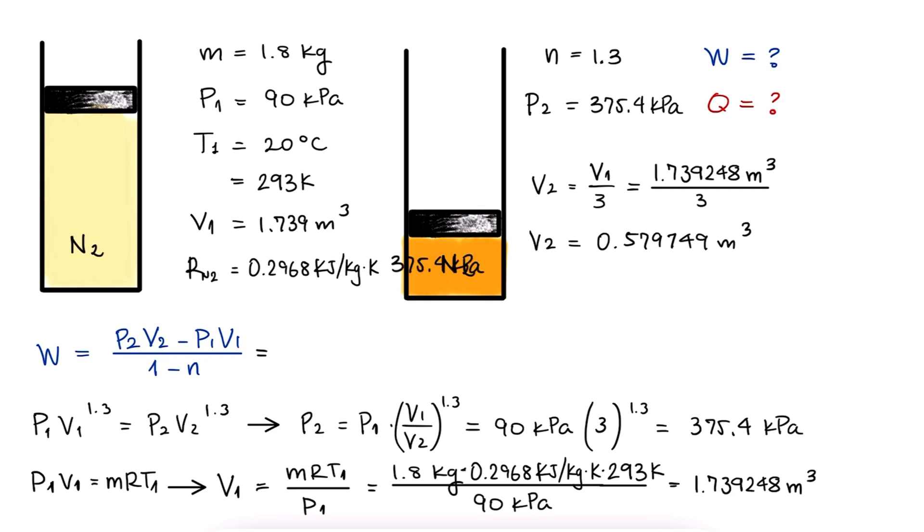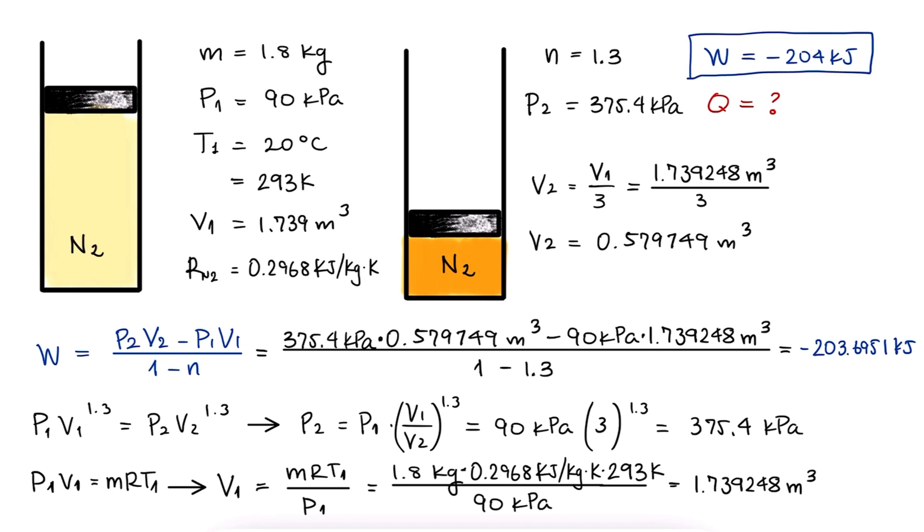We can now substitute the values in the work expression we derived in the main lecture, and find that the work is minus 204 kilojoules. This negative sign is consistent with our convention, since we needed to add work to the system to compress it.